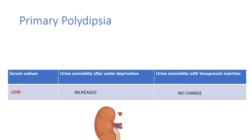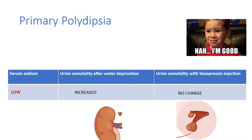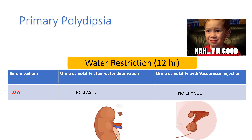Their urine osmolality with vasopressin injection will not change much — just like the normal response — because they have reached their maximum concentrating ability with an intact pituitary. The only problem with these people is that they're drinking a lot of water, but with water restriction they respond very normally.